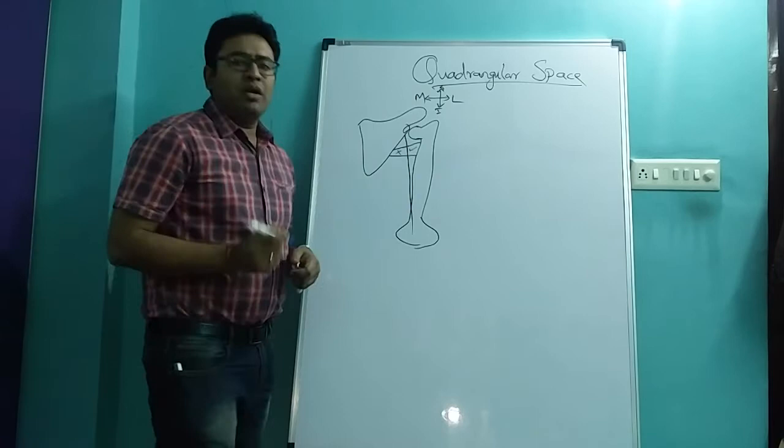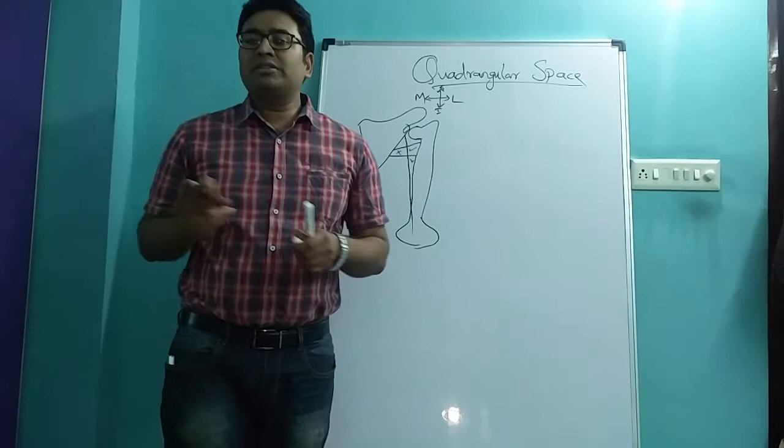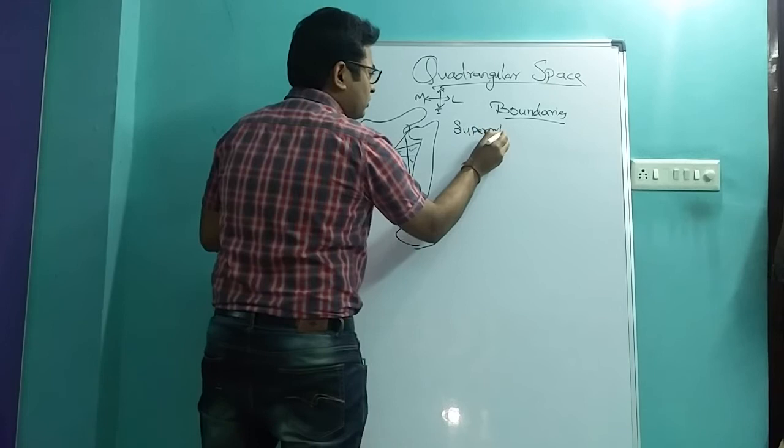We will concentrate on the quadrangular space. First thing is what is the boundary of quadrangular space. When we are seeing the boundary we have to go: what is present superiorly, what is present inferiorly, what is medially, and laterally.